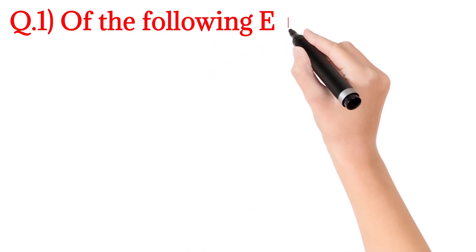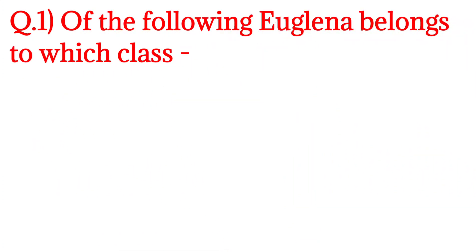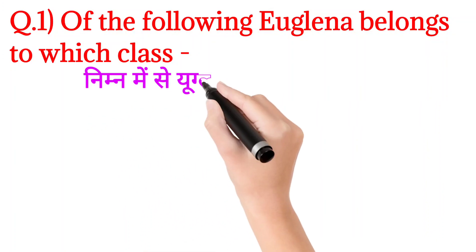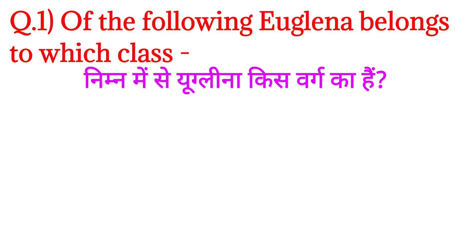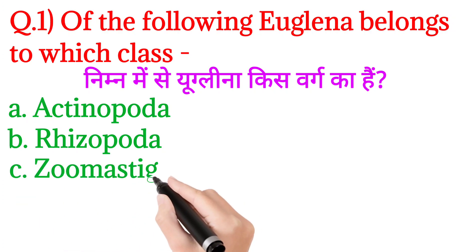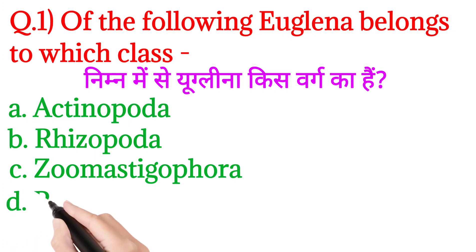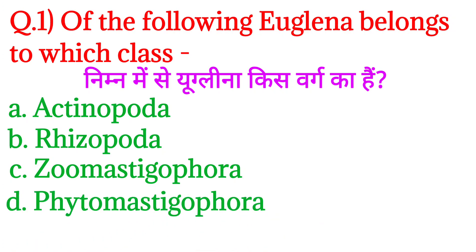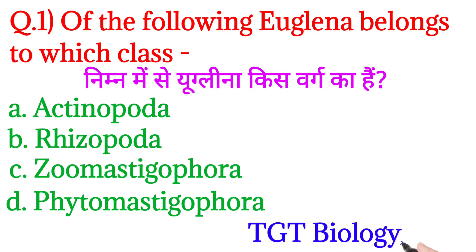Question 1: Euglena belongs to which class? Option A: Actinopoda, Option B: Rhizopoda, Option C: Zoomastigophora, Option D: Phytomastigophora. This question was asked in TGT Biology 2021. The answer is Option D: Phytomastigophora. Euglena belongs to class Phytomastigophora.